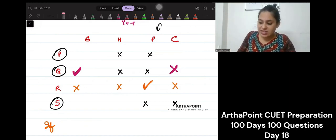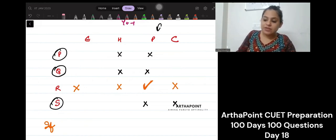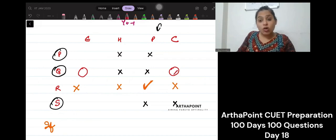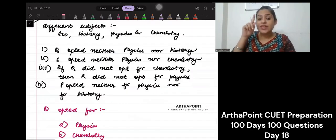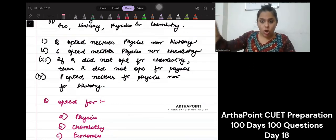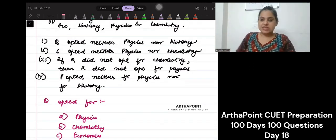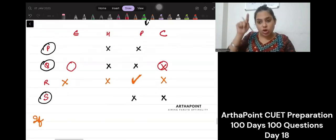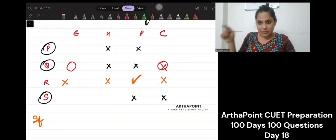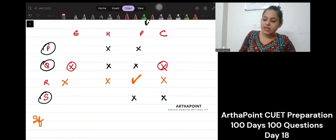So if R has taken physics, then when Q is deciding between eco and chemistry, you cannot put a cross on chemistry. Because this is what the statement is saying. If Q did not opt for chemistry, R did not opt for physics. R has taken physics. So we cannot put a cross against chemistry in Q. So cross for eco.